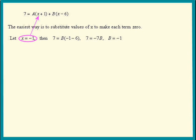So substitute negative 1 in for all the x's and we have 7 equals, the x is negative 1 now, so b times negative 1 minus 6. 7 equals negative 7b. We found b, b is negative 1.